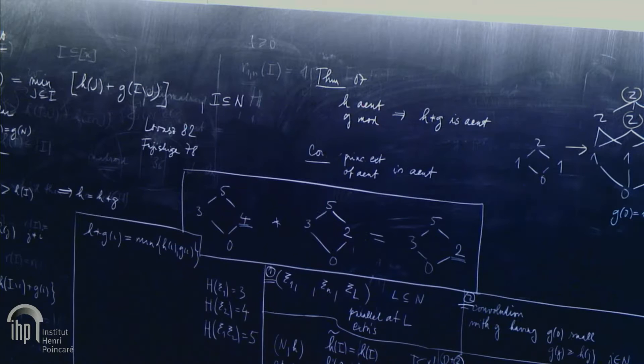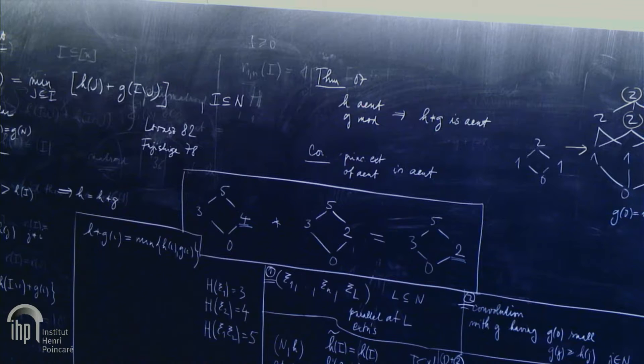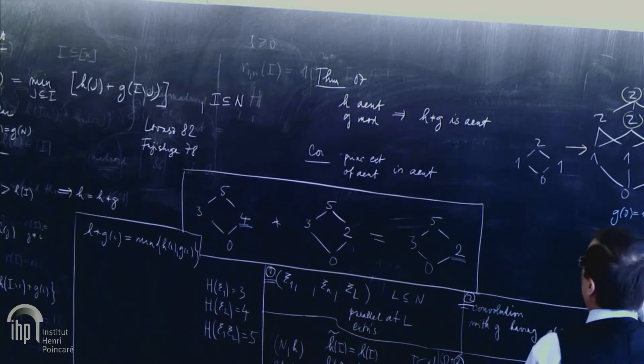So the class of, I mean, the closure of the entropy region is close to principal extensions. And this helps to derive another conceptual result, which is complementary to Chan and Yang. Namely, if I take some polymatroid,